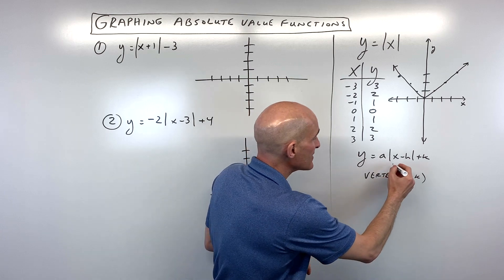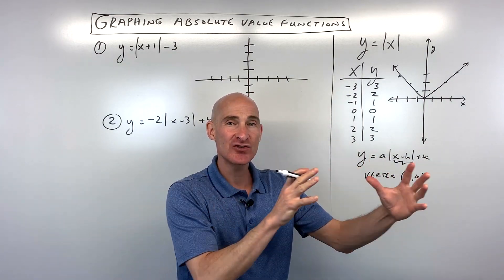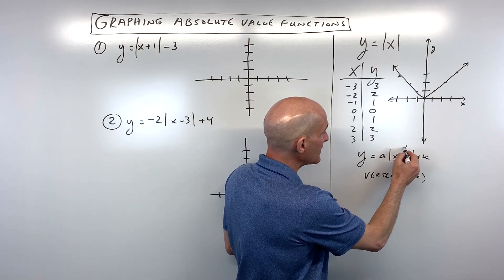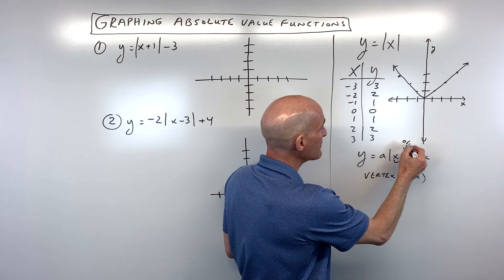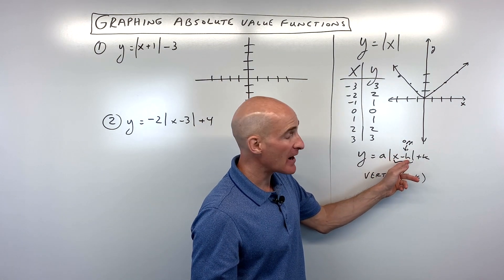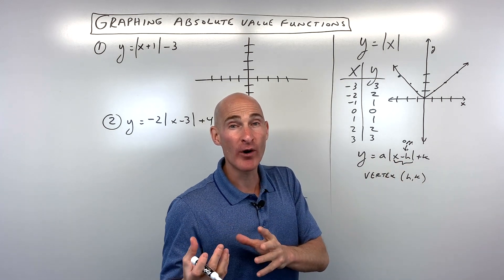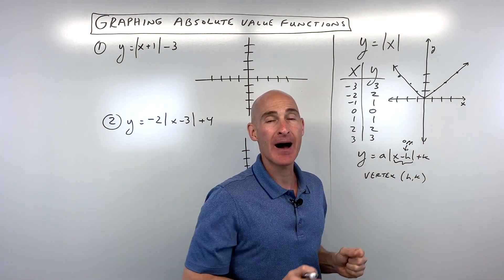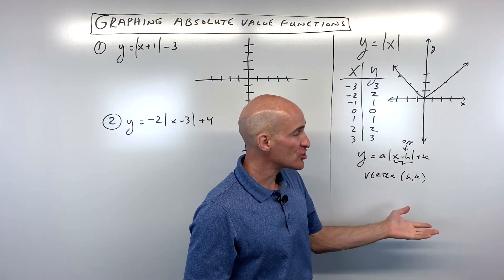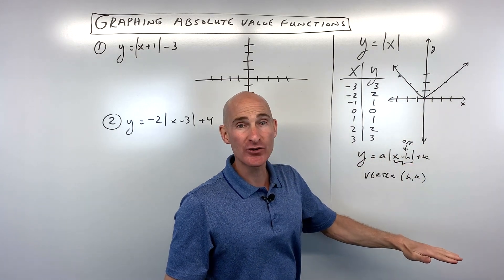So you see this h here that's grouped with the x? This is going to shift it in the x axis direction, like left and right. But you want to remember that this quantity here has actually the opposite effect on the graph. What I mean by that is if you had x minus one, it looks like it's minus one. You'd think it would go left one. It actually goes positive one. It goes the opposite way. Whereas over here, this k value, this is what's involved with shifting the graph up and down. If this is plus two, it would actually go up two. If it's minus two, it would go down two.